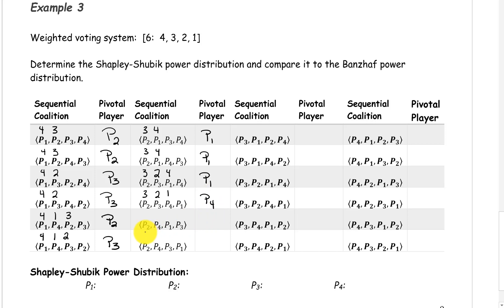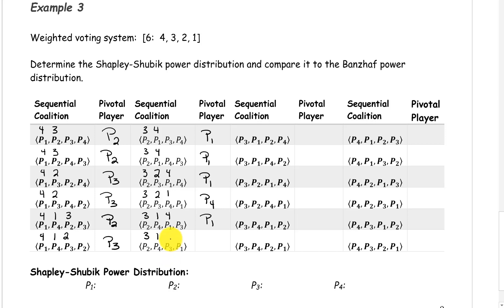Next, players 2, 4, 1, and 3: Player 2 has a weight of 3. Player 4 has a weight of 1. This is only 4, which does not meet quota. We add in player 1, who has a weight of 4, giving a total of 8, which meets our quota. So player 1 is our pivotal player. Next, the sequential coalition with players 2, 4, 3, and 1: Player 2 has a weight of 3. Player 4 has a weight of 1. This is only 4, which does not meet quota. We add in player 3 with a weight of 2, giving exactly 6, which meets quota. So player 3 is our pivotal player.